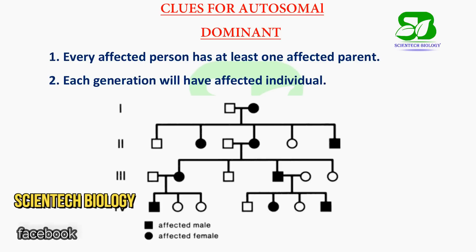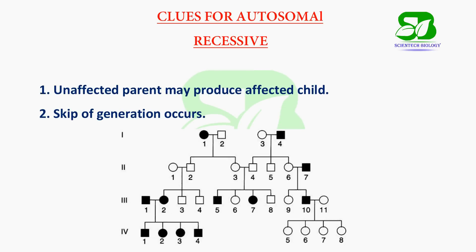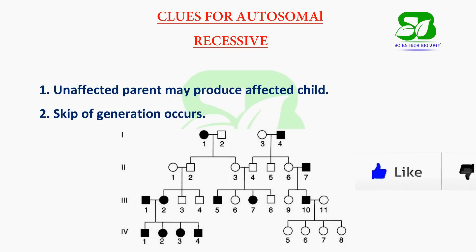This is an autosomal dominant pedigree. Here you can see that in each generation there is an affected child, and this trait comes from the affected parent — that is, no skip of generation occurs here. In an autosomal recessive pedigree, you can see there is a skip of trait in the second generation, and the unaffected first, second, third, and fourth parents of the second generation have their defective children in the third generation.